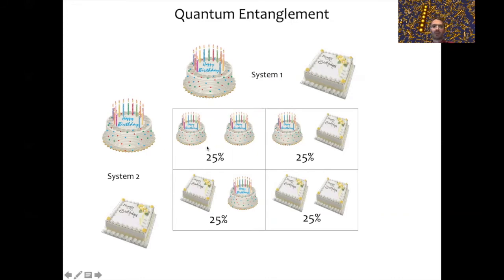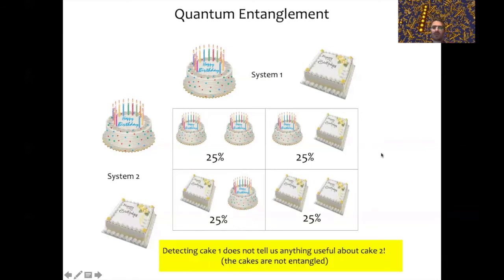Now let's do an experiment where we detect the state of the first cake and we find it to be a round cake. The question is: did we learn anything useful about cake number two? If the first cake is round, it means it could be either the first scenario or the second scenario. From the first two possibilities, we learned that the second cake could be either a round cake or a square cake with the same probability. By detecting cake number one, we didn't actually tell us anything useful about cake number two. This is the case when there's no entanglement between the cakes.